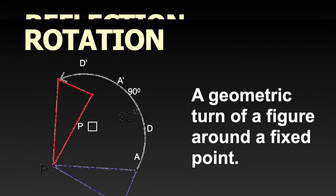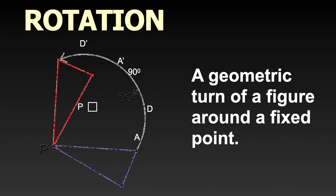Now let's look at rotation. Rotation is the geometric turn of a figure around a fixed point. For example, triangle APD is rotated 90 degrees counterclockwise about the point P. Rotation — turn.